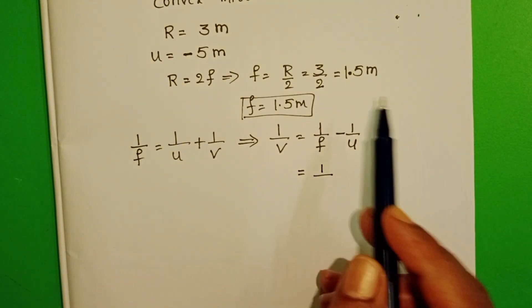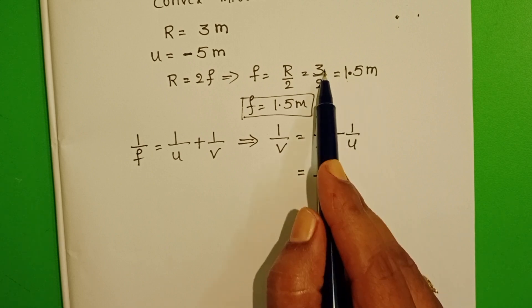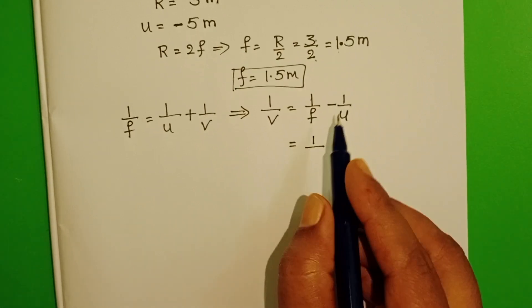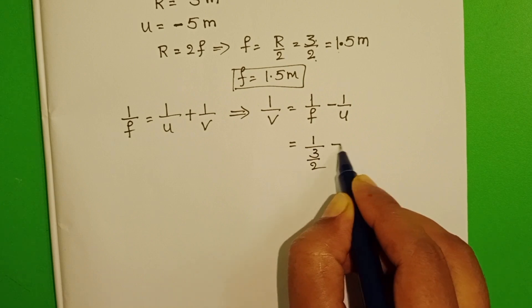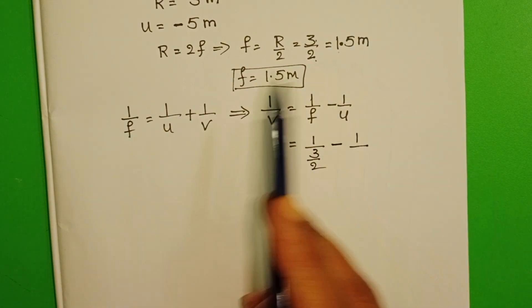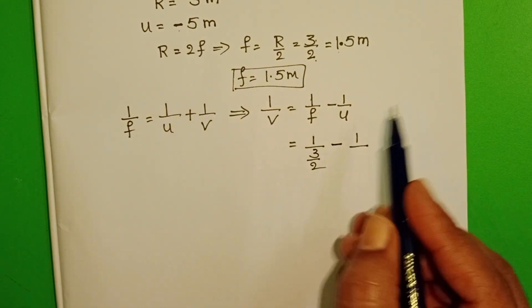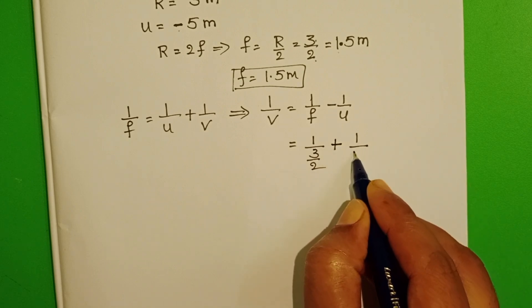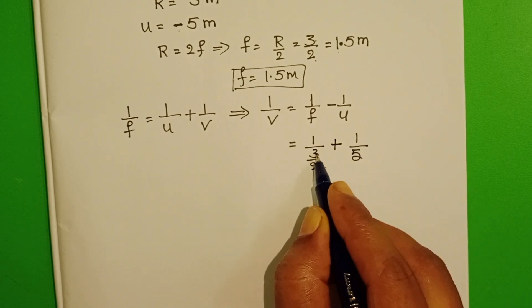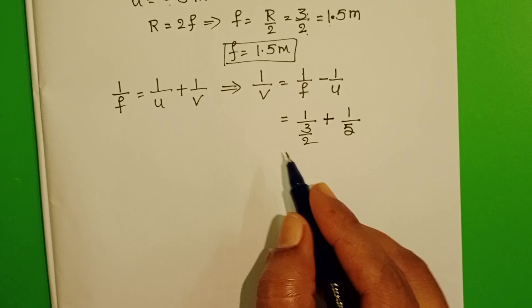Focal length is 1.5 meters or 3 by 2 meters. Substitute 3 by 2 here. 3 by 2 minus 1 by U value minus 5. Minus of minus becomes plus. This fraction becomes its reciprocal.